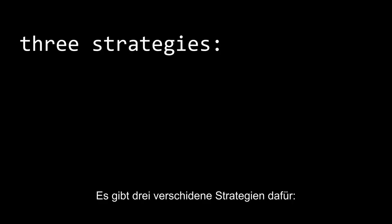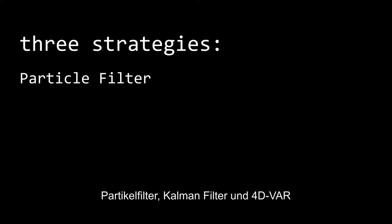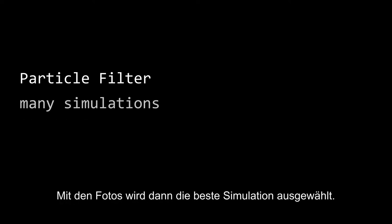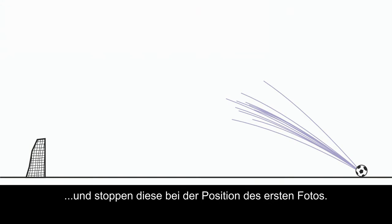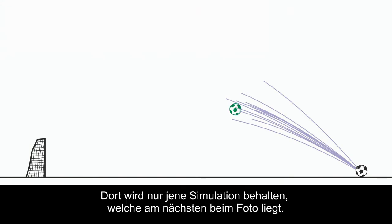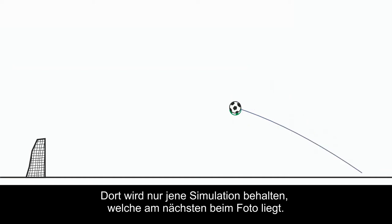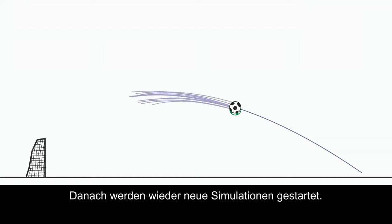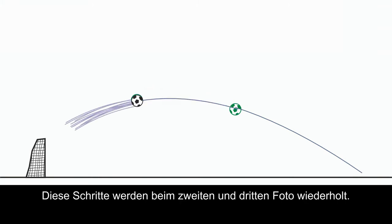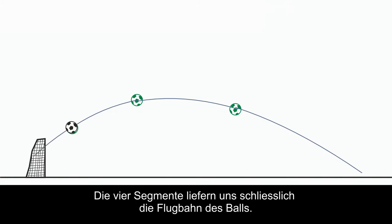There are three different strategies to accomplish this: the particle filter method, the Kalman filter, and 4D Var. The approach of the particle filter is to make many simulations and use the photos to pick the best fitting one. We start with many simulations and stop them once they reach the first photograph. Only the one closest to the photograph is kept. Because there is an error both in the model and in the photograph, we perturb that state a little and then start new simulations again. We repeat this step at the second and again at the third photograph. In the end, the four best segments make up the reconstruction of the ball's trajectory.